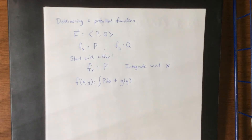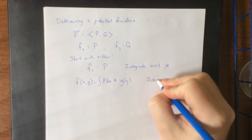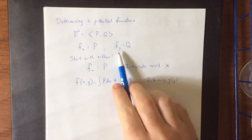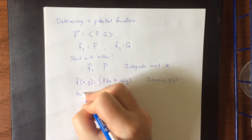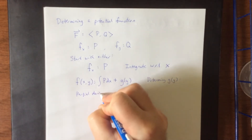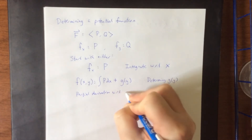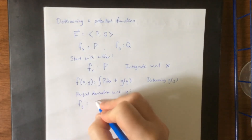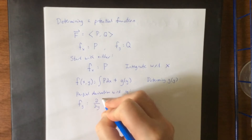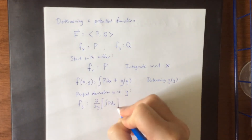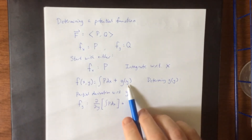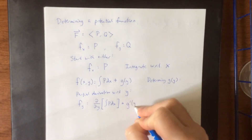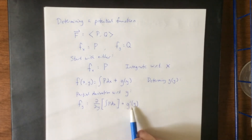Our next goal is to determine g of y. The way we're going to do that is by using the piece of information we haven't yet used. So we're going to take a partial derivative with respect to y. That gives us the partial derivative of f with respect to y is equal to the partial derivative with respect to y of the iterated integral of p with respect to x, plus — since there are no x's present — taking a partial derivative is the same as taking an ordinary derivative, so this will be g prime of y.